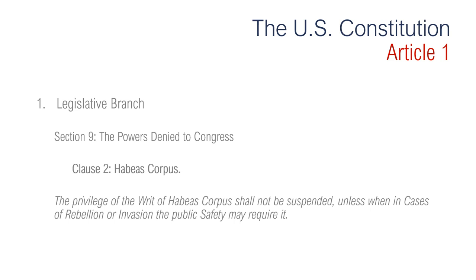Section 9, Clause 2 is about habeas corpus. It states that the privilege of the writ of habeas corpus shall not be suspended unless, in cases of rebellion or invasion, the public safety may require it. A writ of habeas corpus is a court order directing a sheriff or other public officer who is detaining another person to 'produce the body' — that's what habeas corpus translates into. They need to produce the body of the detainee so that the court can assess the legality of the detention. Habeas corpus cannot be suspended except in cases of rebellion, invasion, or if there's some kind of public safety issue that would require it.